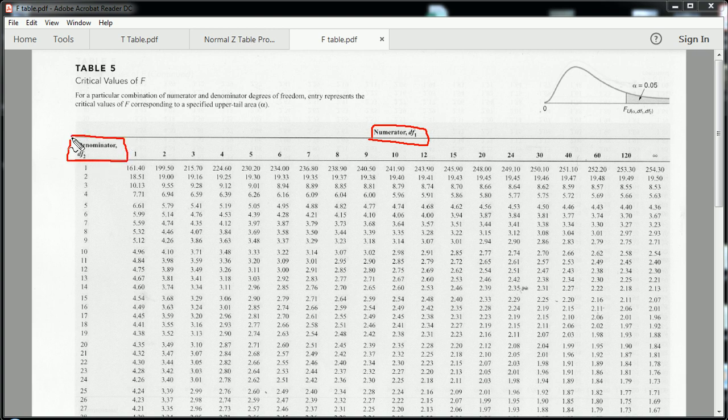Now, once you've determined what your degrees of freedom 1 and 2 are—depending on the type of problem and application, there are different ways of getting those values—once you've determined that, you go over to the first row and find your degrees of freedom 1 or numerator. Let's arbitrarily say it's 5. Then you go to the first column and get your degrees of freedom 2 or denominator. Let's say that's 15.